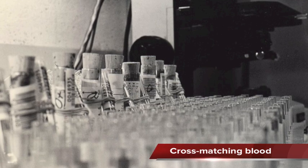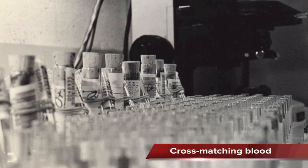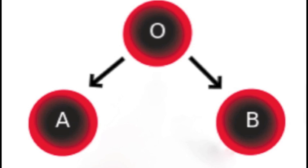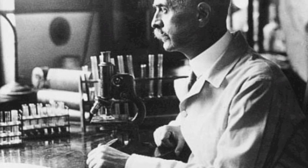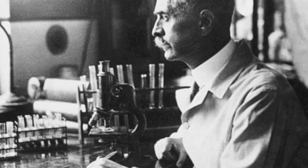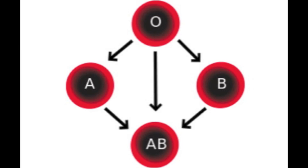Blood types were finally discovered in 1901. Karl Landsteiner was the first to discover blood types. He discovered types A, B, and O in a series of experiments in 1901, earning him the Nobel Prize. Two years later, after further testing, Landsteiner discovered type AB.